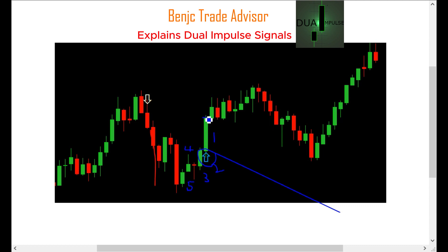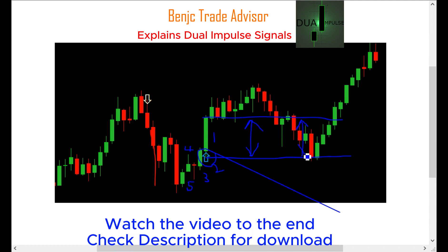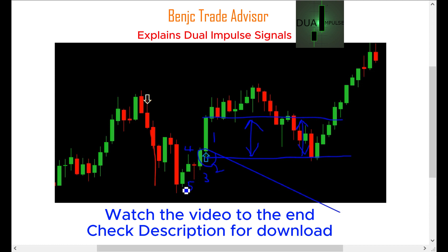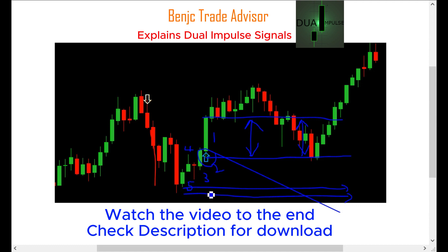My entry will start from the close to the low range of candle number one — that is the range of my orders. This doesn't mean my stop loss is below candle number one. My stop loss goes just below candle number five. Don't put it exactly at the low of candle five, but just below it to give allowance for things like manipulation.